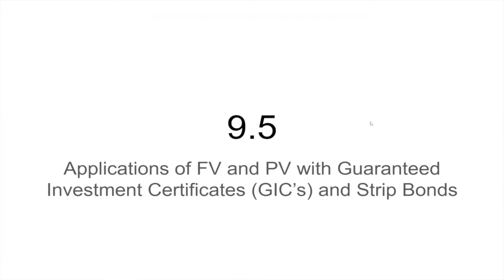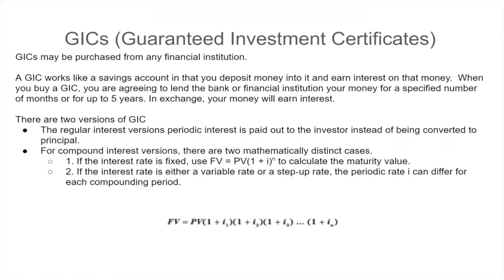In earlier editions of the textbook, there's also some discussion about Canada Savings Bonds. The fact of the matter is Canada Savings Bonds don't exist anymore — they've been discontinued by the federal government, so we don't need to deal with them. What we are talking about is something called a guaranteed investment certificate. There are lots of examples of that. People buy GICs, as they're called for short, and they're pretty common in the banking industry.